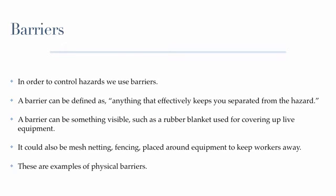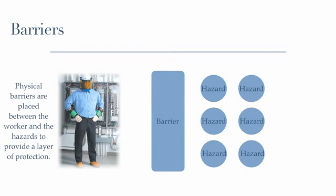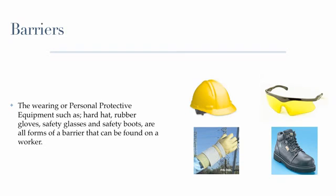In order to control hazards, we use barriers. A barrier can be defined as anything that effectively keeps you separated from the hazard. A barrier can be something visible, such as a rubber blanket used for covering up live equipment. It could also be mesh netting or fencing placed around equipment to keep workers away. These are examples of physical barriers. Physical barriers are placed between the worker and the hazard to provide a layer of protection. The wearing of personal protective equipment such as hard hat, rubber gloves, safety glasses, and safety boots are all forms of a barrier that can be found on a worker.